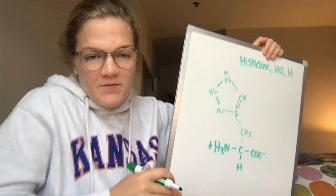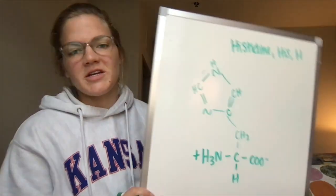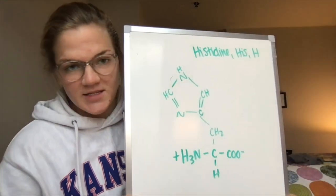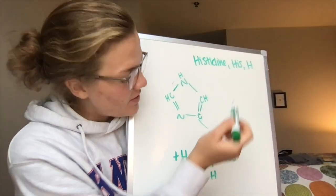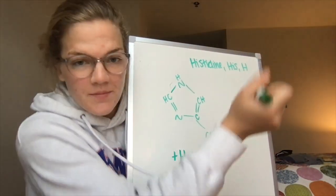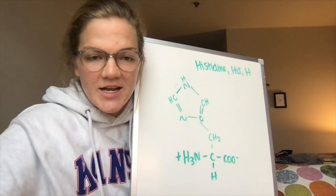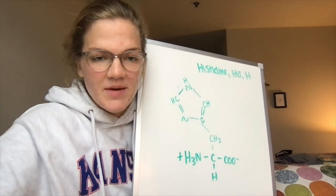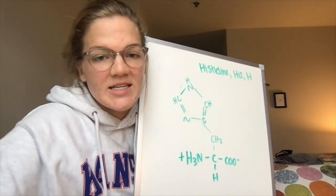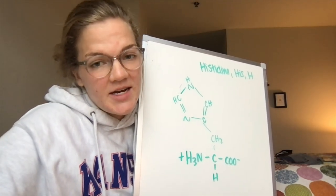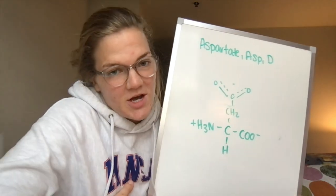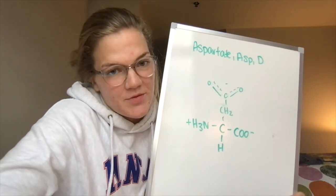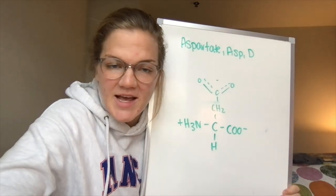Here we have histidine with the three-letter abbreviation of HIS, the one-letter abbreviation of H. We got a fun little side chain here with a five-membered ring. A fun fact is that histidine is found abundantly in hemoglobin.